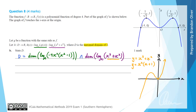A log e function will only exist when the function inside has values that are positive and non-zero. Because the intercepts are at (−1, 0) and (0, 0), this is effectively a composite function question — the only parts of this graph where the y-values can go inside a log are from just after negative 1 to almost 0, and then from 0 onwards again.